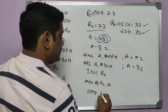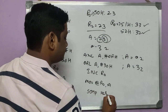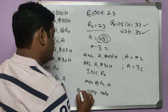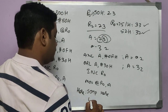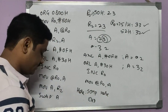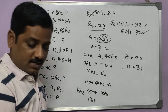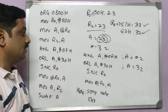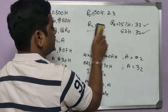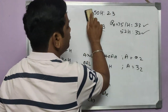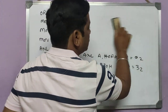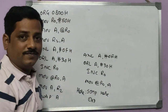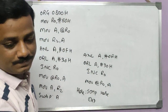Finally, I add SJMP here to end the program loop. This completes the BCD to ASCII conversion program. I hope this is clear — if it is, please click the like button and share it among your friends. Thank you.